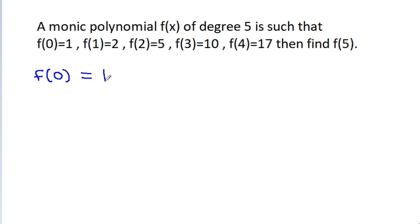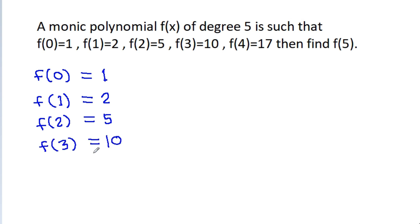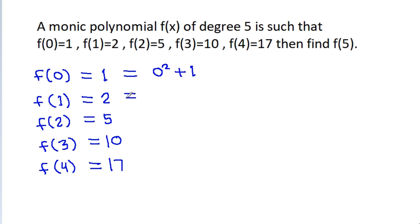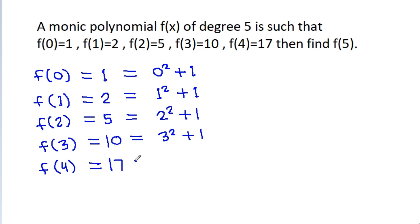So, f(0) is 1, f(1) is 2, f(2) is 5, f(3) is 10, and f(4) is 17. And we observe that 1 = 0² + 1, 2 = 1² + 1, 5 = 2² + 1, 10 = 3² + 1, and 17 = 4² + 1.